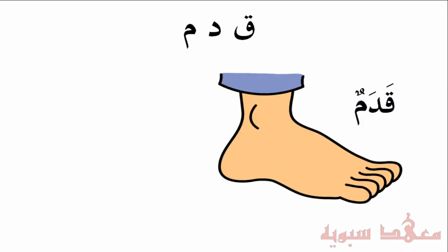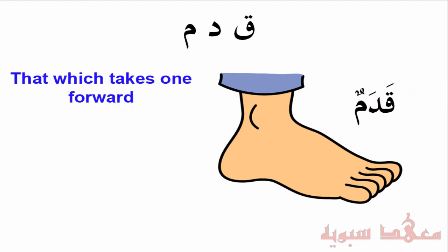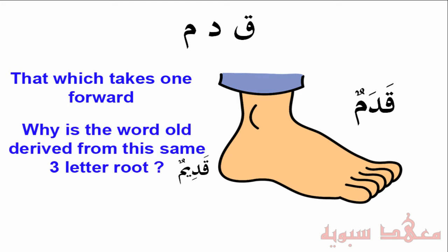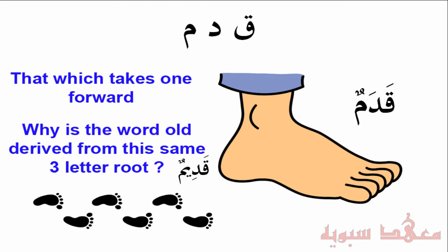In Arabic, the foot is called qadam. Qadamun — indefinitely — means a foot; aqdam means feet; and qadaman means two feet. What is interesting is that the feet are that which takes one forward. So when you want to proceed, or to be in front, or to reach somewhere, you do this using your feet. So why is the word 'old' derived from this same three-letter root? The reason is that the foot leaves footprints — it leaves traces. That is how we reconcile the two meanings: when one proceeds somewhere, he leaves something behind. One is travelling and he leaves his homeland.